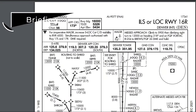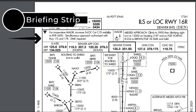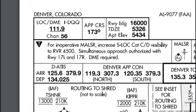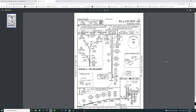Underneath the procedure info we get into what's called the briefing strip. Starting over on the left, it gives us any notes we may need for the procedure. For example, it says for inoperative MALSR lighting, increase the localizer category visibility to an RVR of 4,500. These are important notes to brief yourself on before you fly the approach.